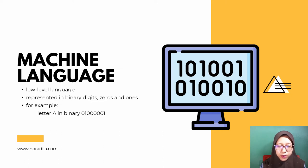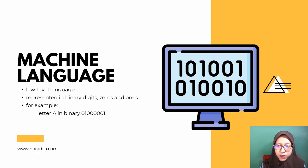For example, 01000001 is the letter A in binary. Since computers are digital devices, they only recognize binary data. For every program, video, image, and character of text, it is being represented in binary. All programs and programming languages eventually generate or run programs in machine language.